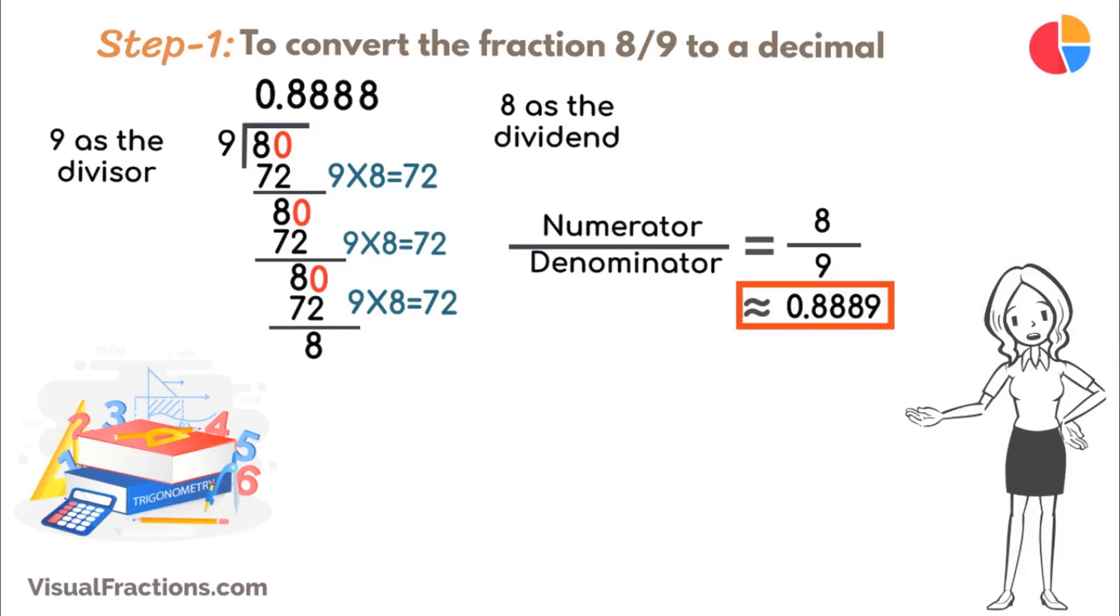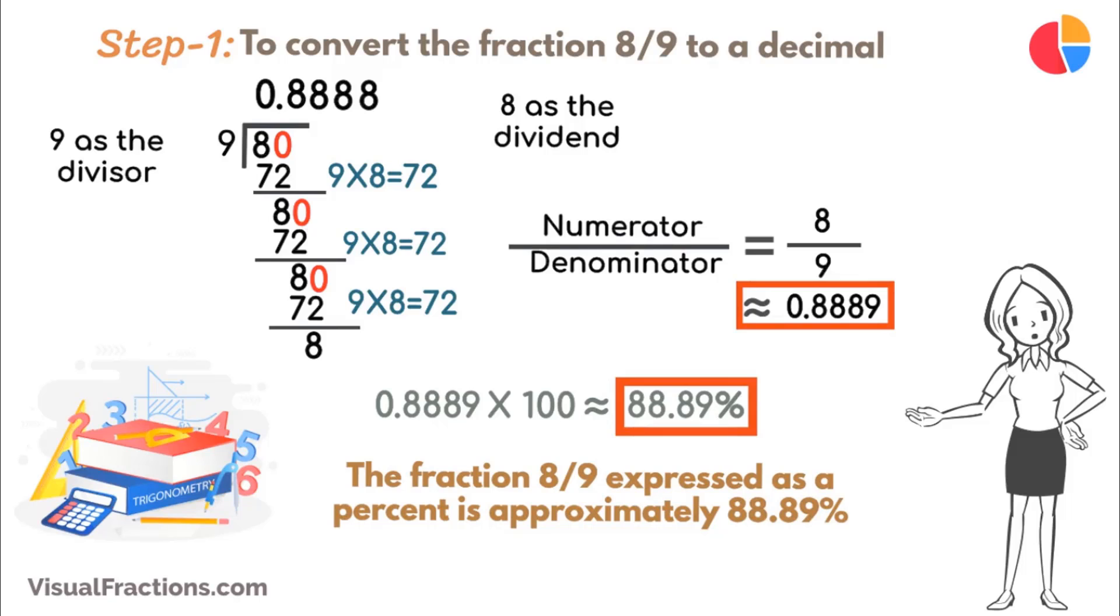Now, to convert 0.8889 to a percent, we simply multiply it by 100, resulting in approximately 88.89%. So, there we have it. The fraction 8 ninths expressed as a percent is approximately 88.89%.